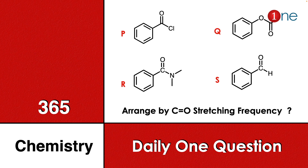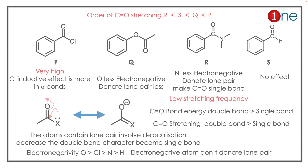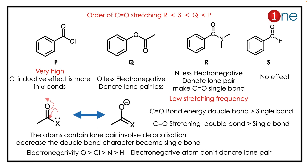The answer is simple — the stretching frequency order is R, S, Q, P, based on the electronegativity effect. Here, the electronegative atom doesn't donate electrons to the carbonyl group, whereas a less electronegative atom can donate electrons to it.